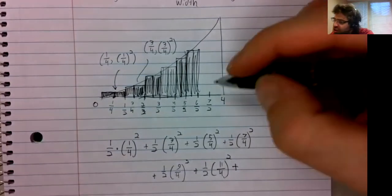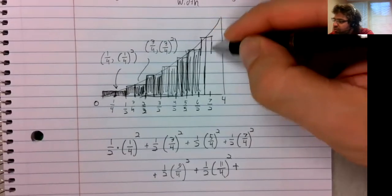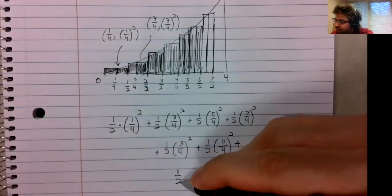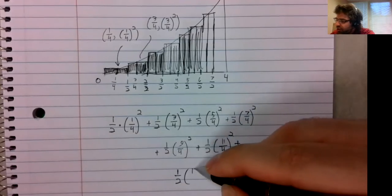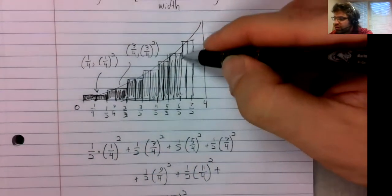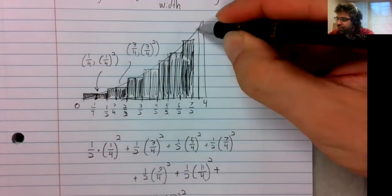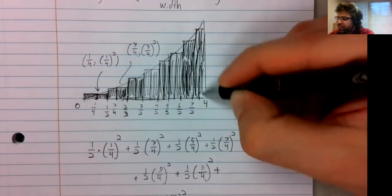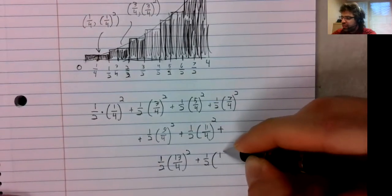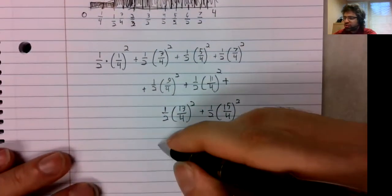I'm not going to sit here and tell you with a straight face that these are the most exciting problems, but at least we're almost done. That was one half times thirteen fourths squared. And this is one half times fifteen fourths squared.